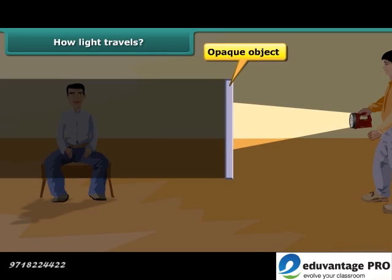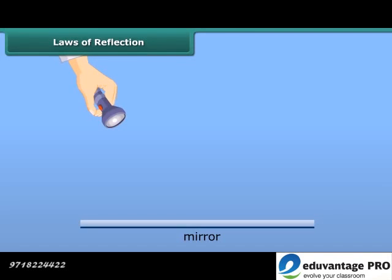If we keep an opaque object in front of the source of light, the path of light is obstructed, thus forming a shadow behind the opaque object. This shows that light travels in a straight line, else we could have seen through the opaque object.